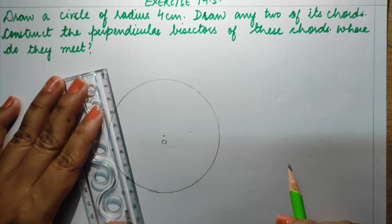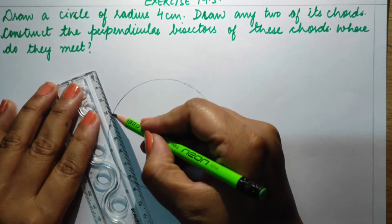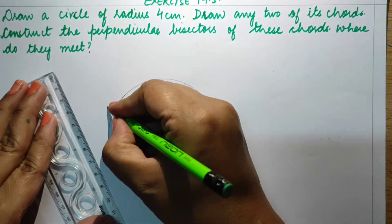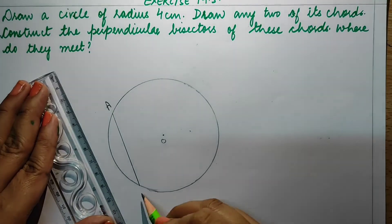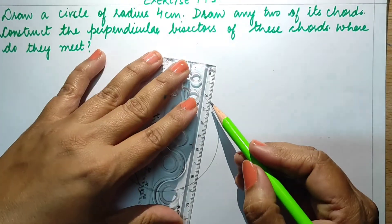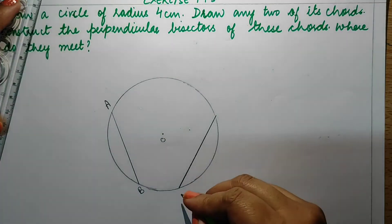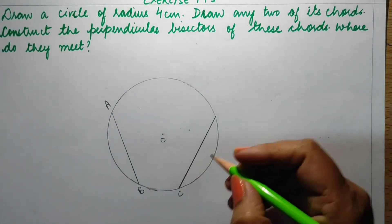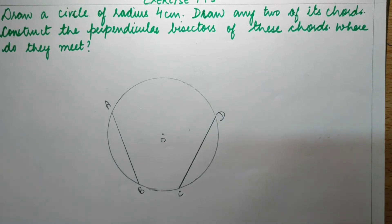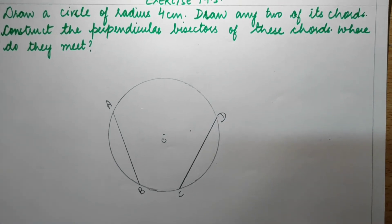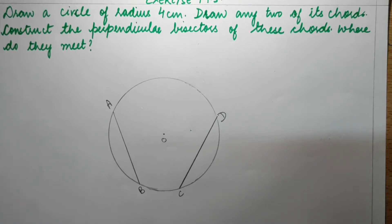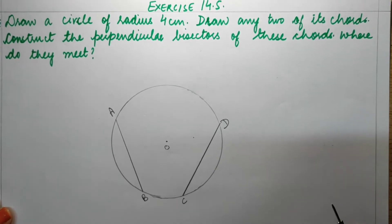I am going to draw the chords like this — this is the first chord AB and this is the second chord CD. Now what we need to do is draw the perpendicular bisectors of these two chords and then check where they meet each other.